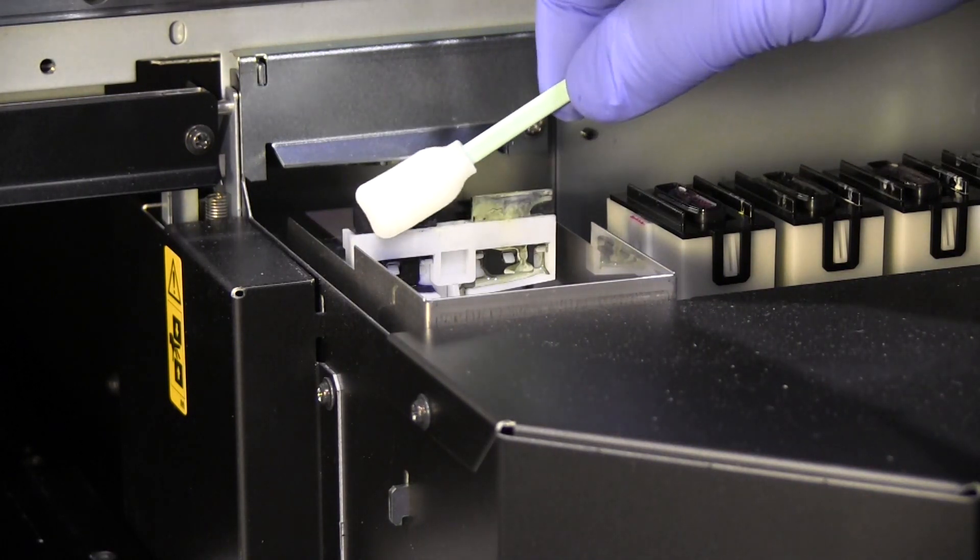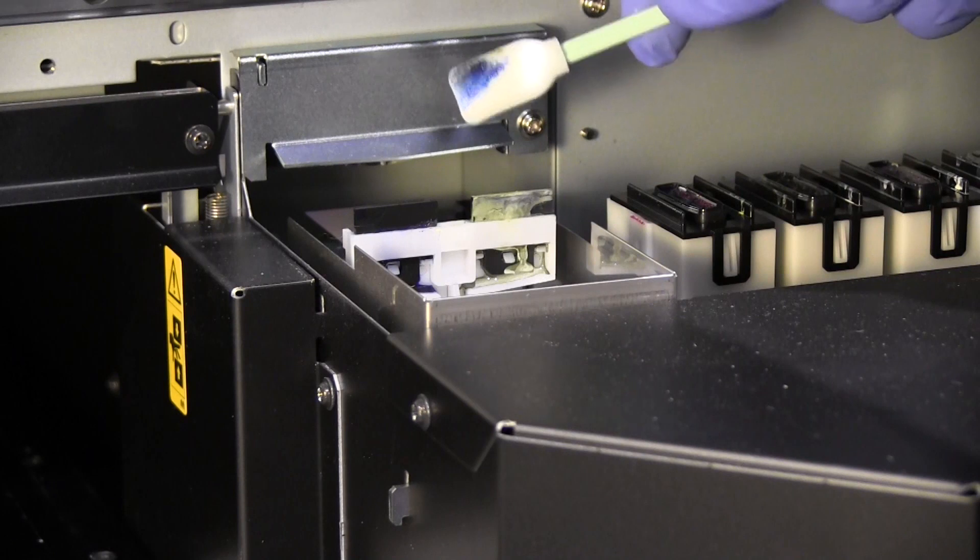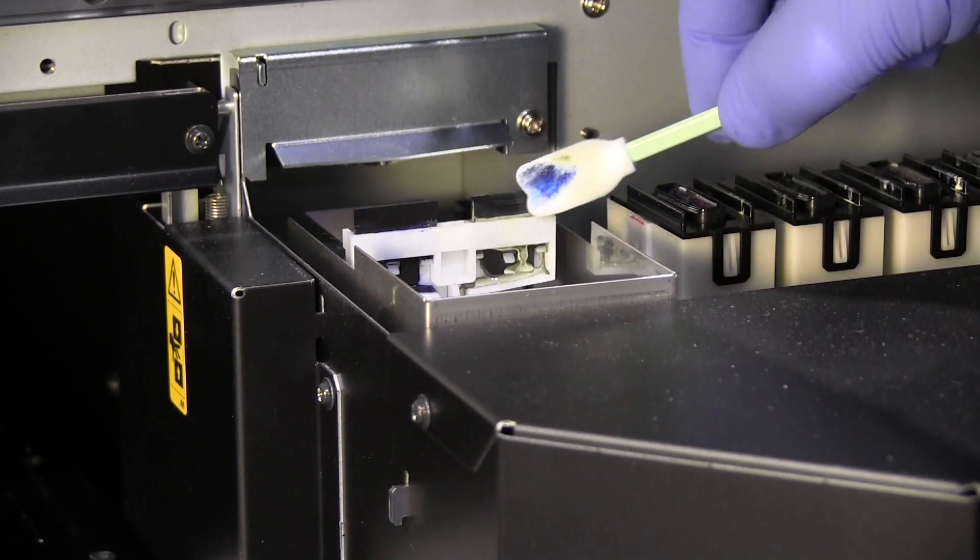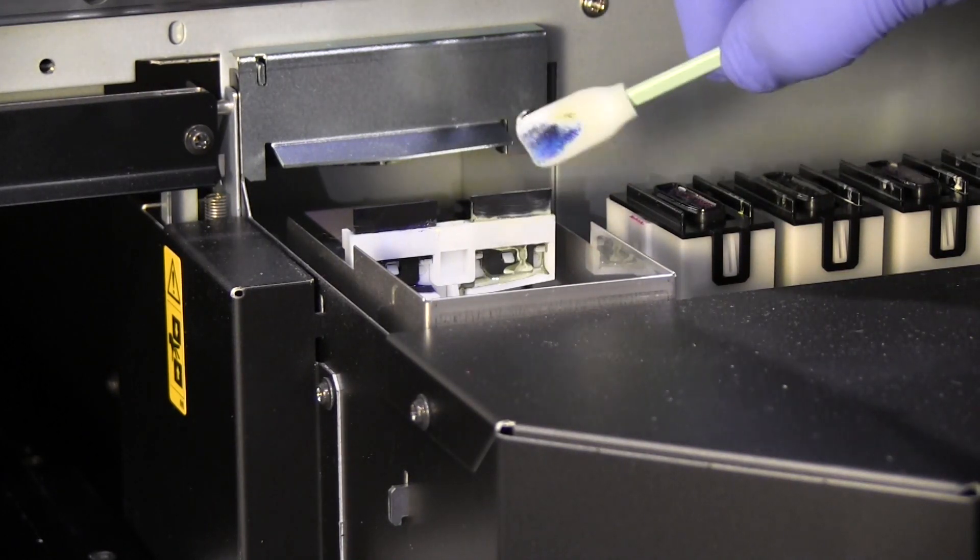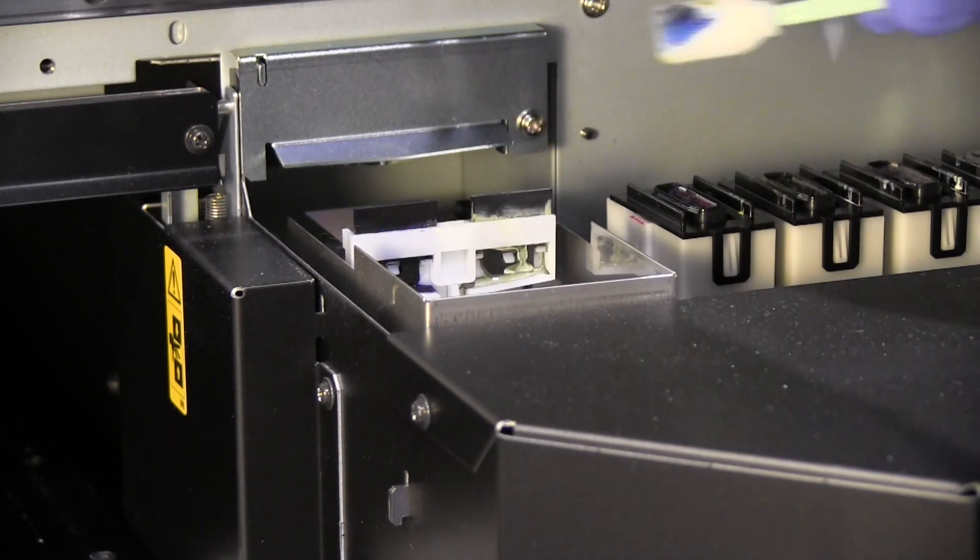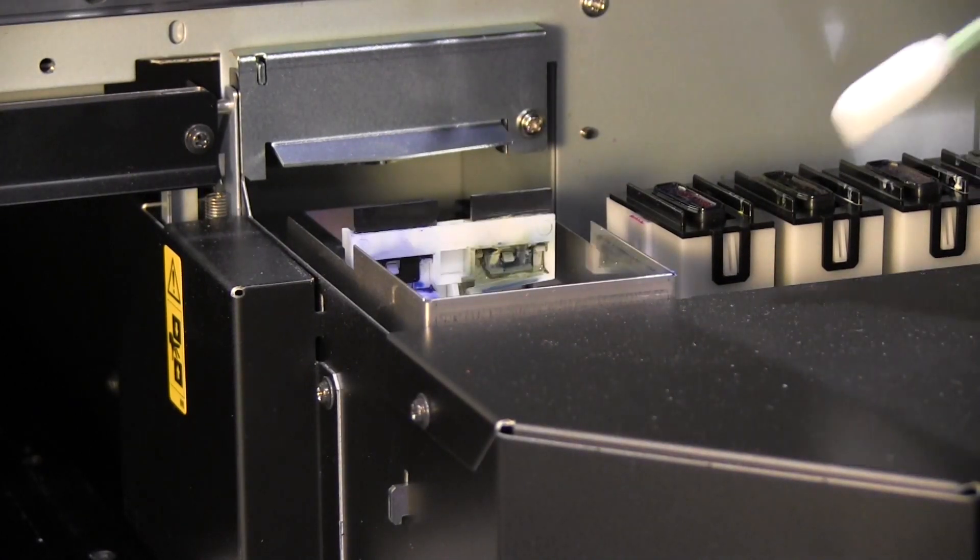Now moving over to the right hand side of the machine, we will need to clean all around the wiper blades to remove any excess ink. You may need to gently rub at the surface of the wiper if ink is accumulated and dried there.